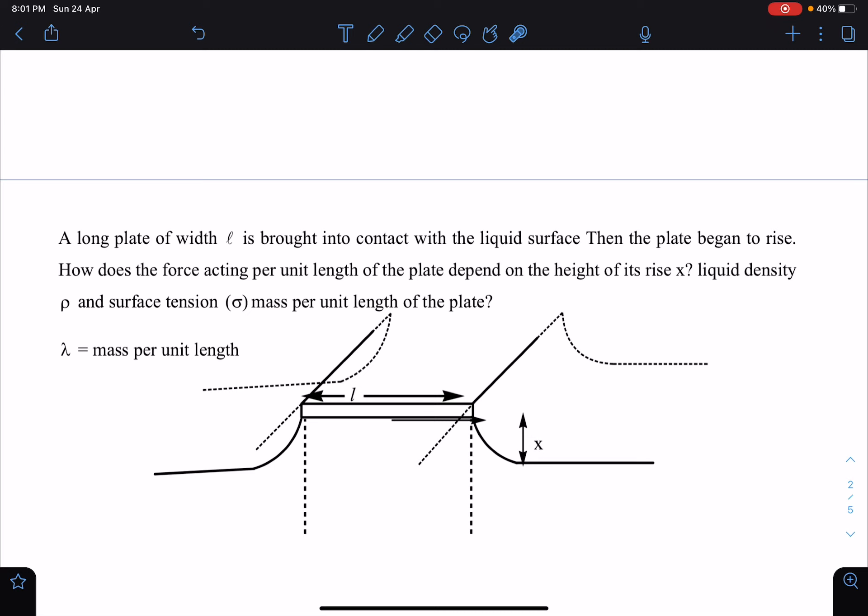It is brought into contact with the liquid surface, then the plate begins to rise. With the help of an external agent we are lifting it up. How does the force acting per unit length of the plate depend on the height x? x is from water level. Liquid density ρ is given, surface tension σ is given, and mass per unit length of the plate λ is given to us.